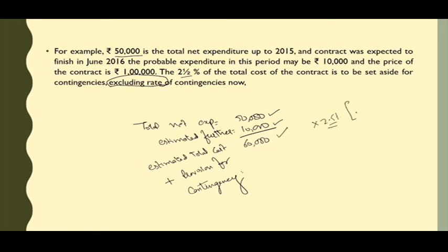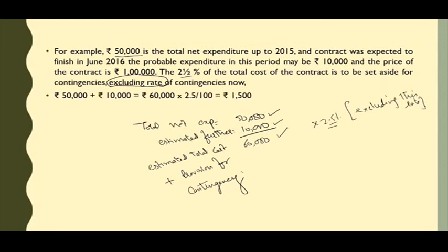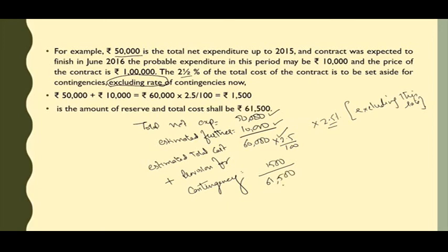Ab hum ne kya karna. Dekho pehle to samjho ki diya kya hai. Pachas hazaar kharcha kya hai — total net expenditure jo ab tak ham kar chuke hai. Or estimated further expenditure kitna hai — that is 10,000. To iska matlab humari cost kitni hogi, 60,000 — or ye kawansi cost hai — ye estimated total cost hai. Ab actual is total cost ka 2.5% nikala: 60,000 × 2.5/100 = 1,500. And 1,500 add karte hi, meere paas jo amount aagyi, woh 61,500.